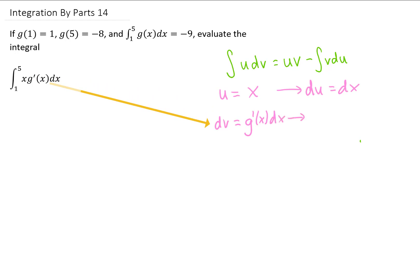To find v, as always, we need to integrate, and integrating g prime of x is just going to give us g of x.